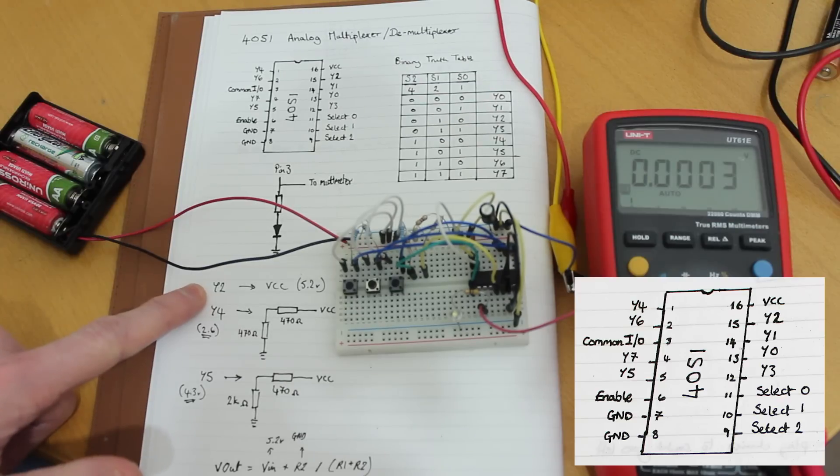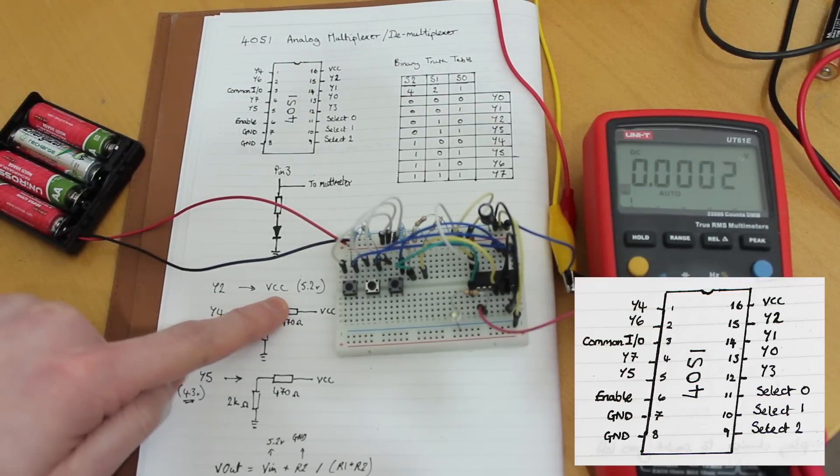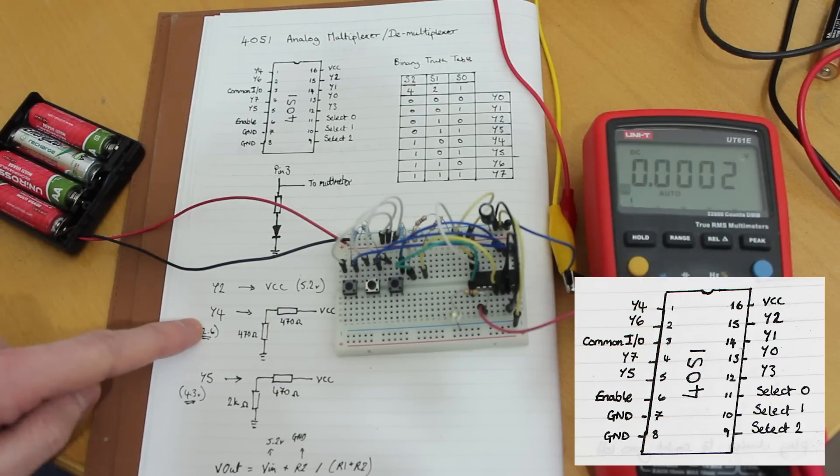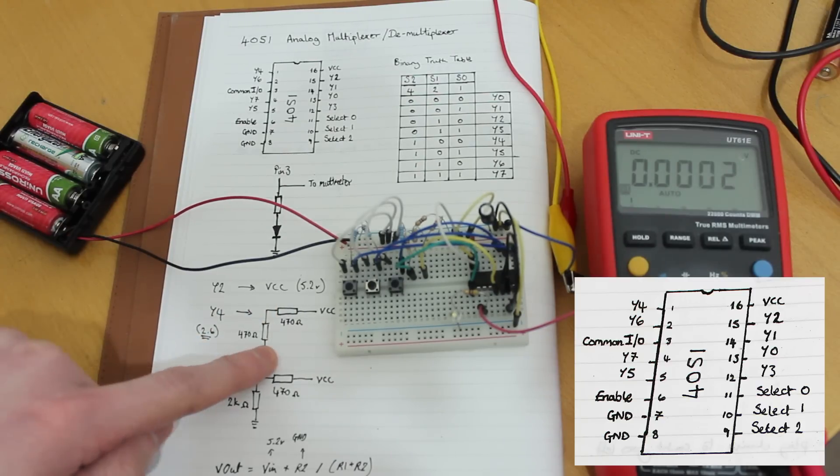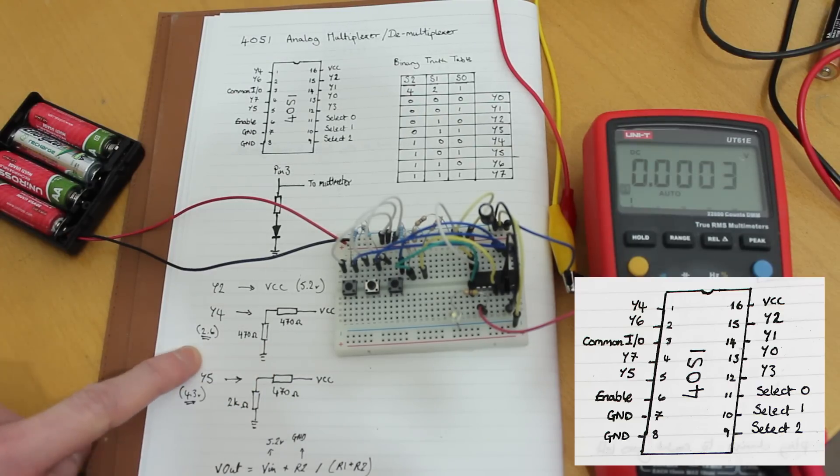So on Y2, that's the common input output just on pin 15. We've connected that directly to VCC. On Y4, which is pin 1, we've got a resistor divider with two 470 ohm resistors. And I expect that to roughly halve the voltage. So it's going to give us 2.6 volts.